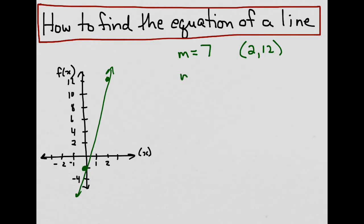Recall that m is equal to the change in y over the change in x, or y minus y1 over x minus x1. You'll notice that I didn't write this as y2 minus y1 over x2 minus x1, because I don't have a second point on the line.